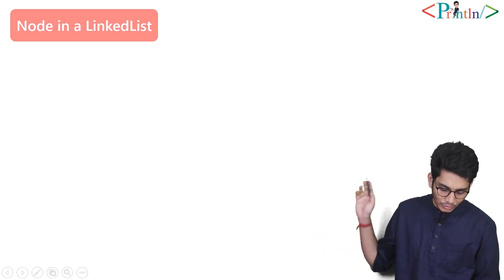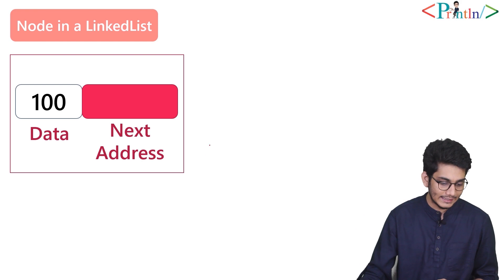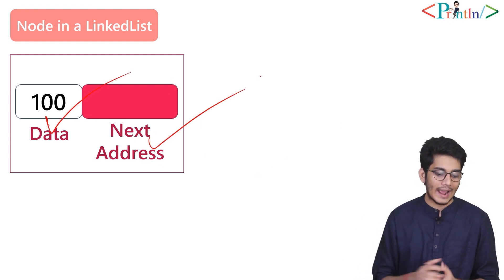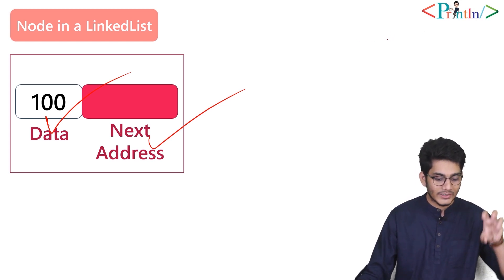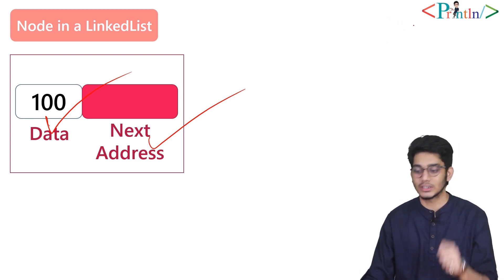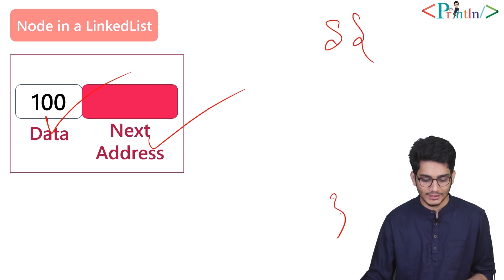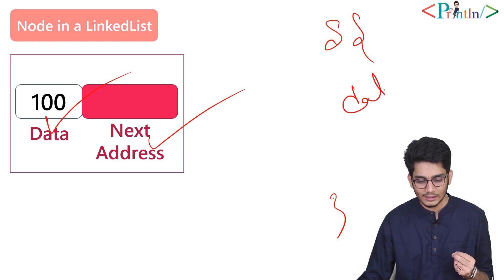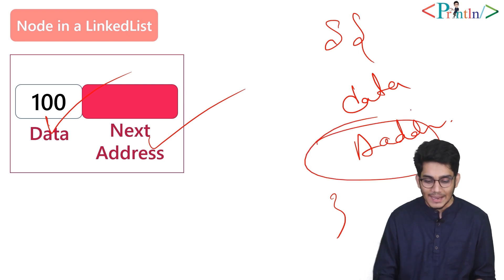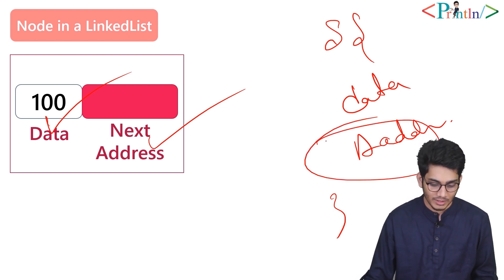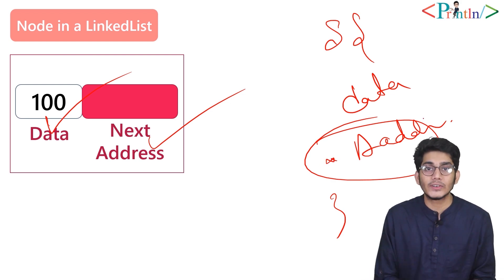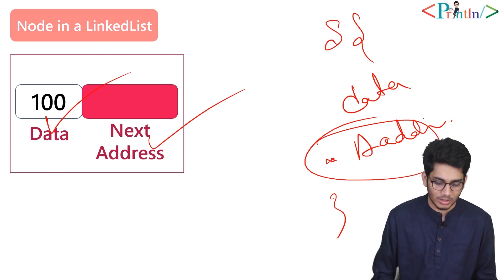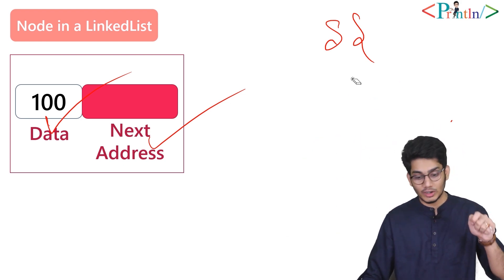Now let's see what a node is in a linked list. It has two parts: a data part and a next address part. To create this data type we need a structure. Inside the structure we have two fields — one is data and one is address — and the type of the address field is the structure itself, so it stores the address of another structure block.